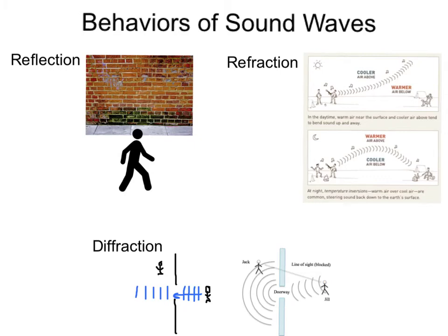Behaviors of sound waves. Sound waves can exhibit all the same behaviors of reflection, refraction, and diffraction. You can imagine yourself standing right here in front of a wall, but if you yelled at that wall, the sound would come back at you and you would hear your echo. That would be sound reflecting off of the wall.